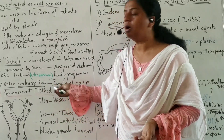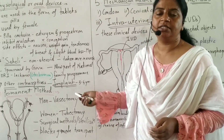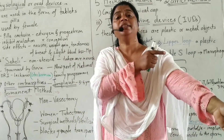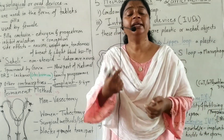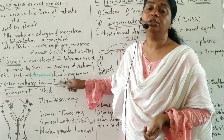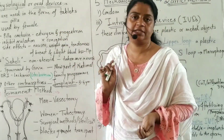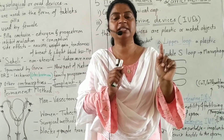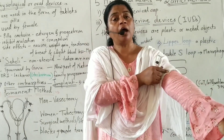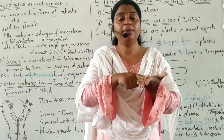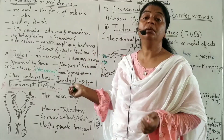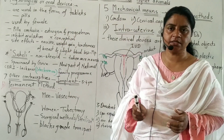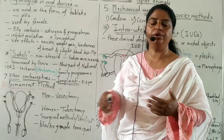The next contraceptive is the implant. An implant is a thin, tiny rod like a matchstick. It is implanted under the skin in the upper arm of a female. It releases estrogen and progesterone hormones and plays the same role as oral pills — secreting these hormones into the blood to prevent pregnancy.